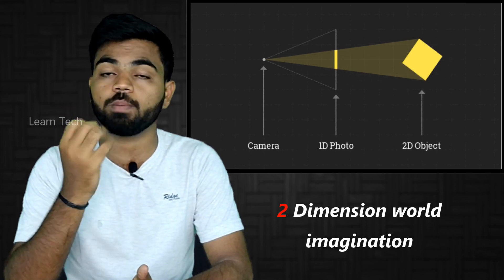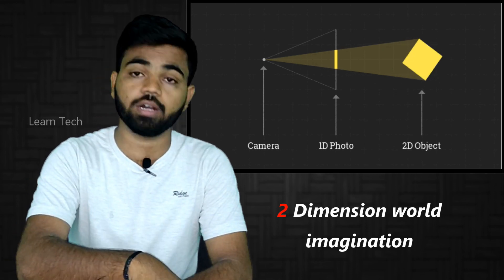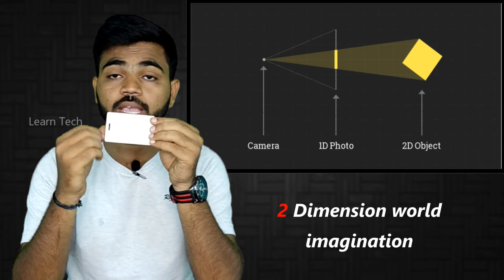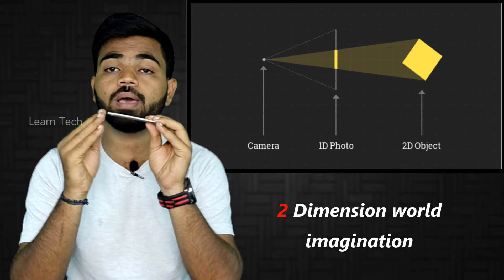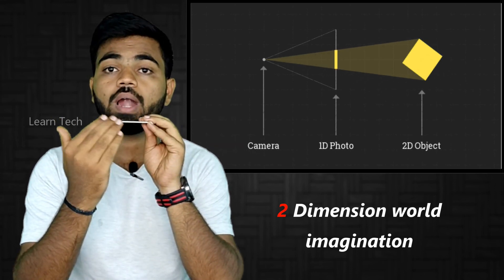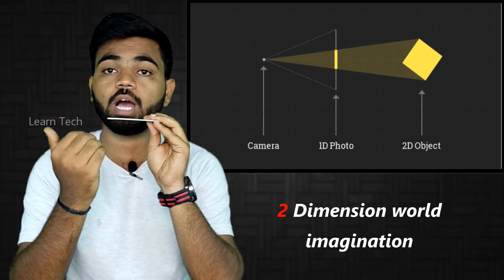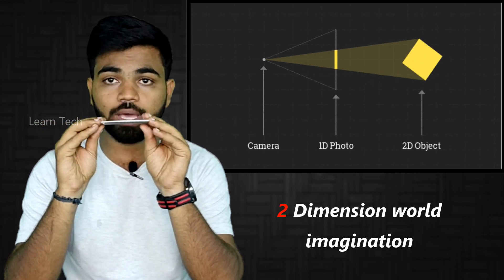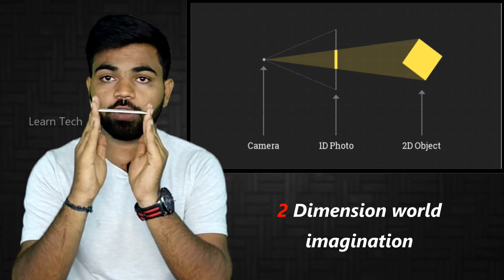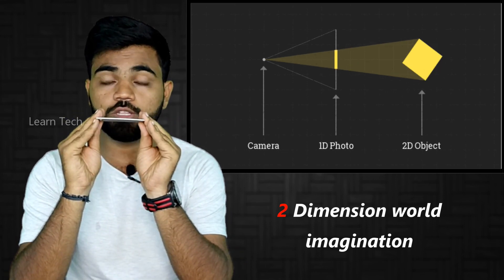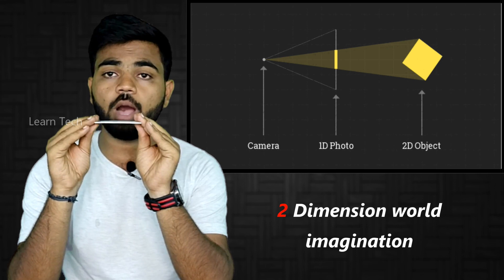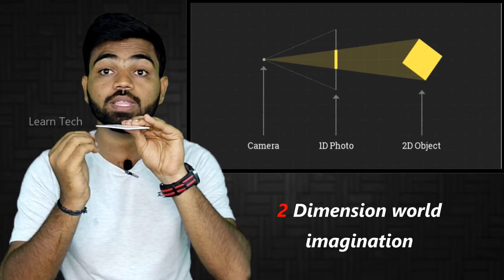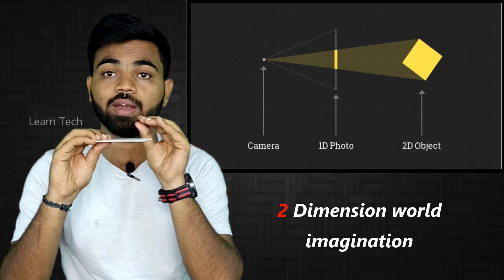For example, we can see a tag. If we see a tag, there is a square shape. We can see the 2D object — a front view and a side view. We can see one view: it is a square. From the front view, you can see a line; from another angle, you can see a square.